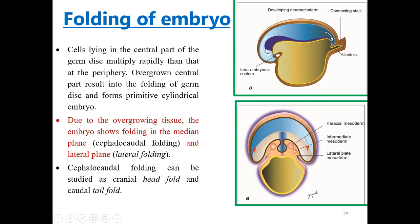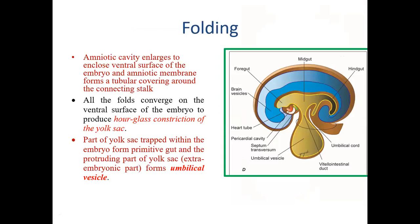Cephalocaudal folding can be studied as a cranial head fold and a tail fold. Due to folding, the amniotic cavity enlarges to enclose the ventral surface of the embryo, and the amniotic membrane forms a tubular sheath around the connecting stock. All folds converge on the ventral surface of the embryo to produce an hourglass constriction of the yolk sac. A part of the yolk sac is entrapped into the embryo.